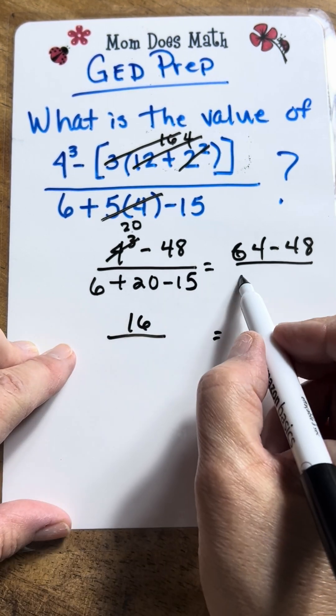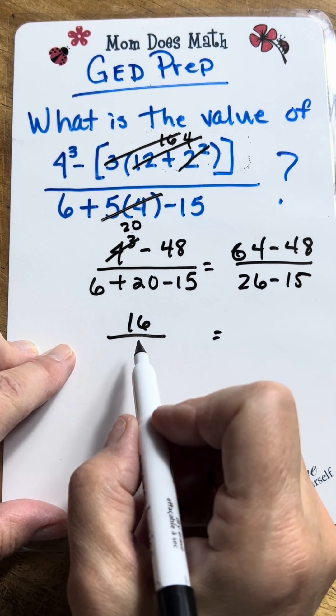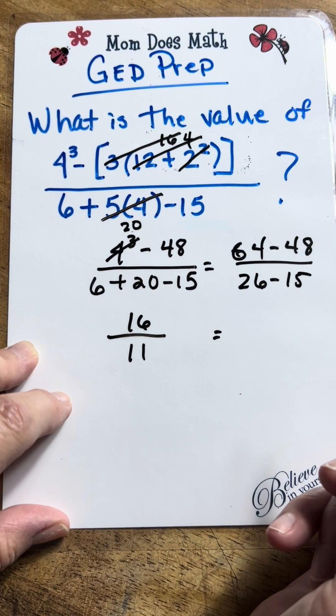Alright, 6 plus 20 is 26 minus 15. 26 minus 15 is 11.